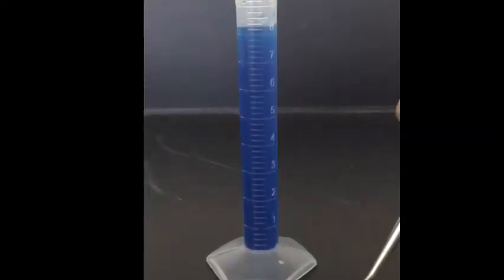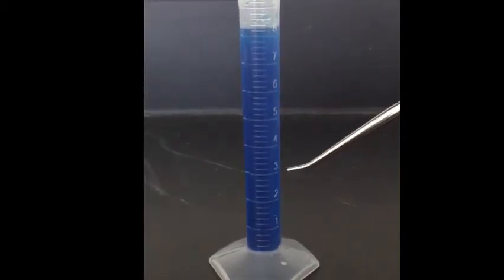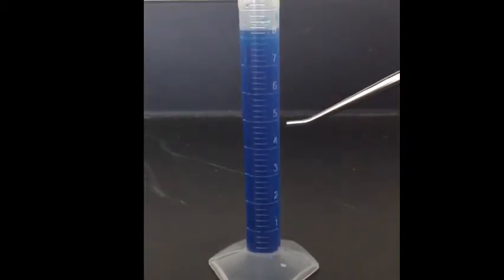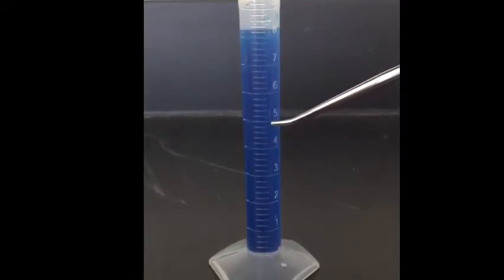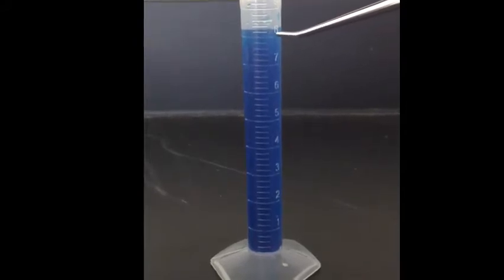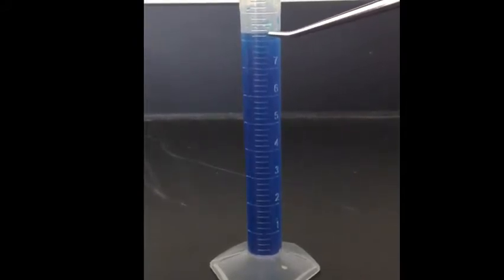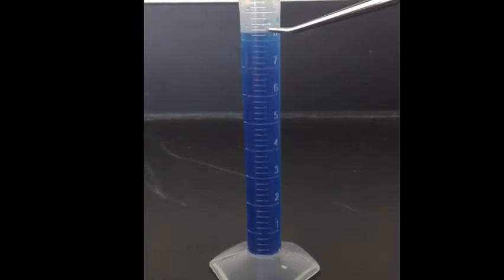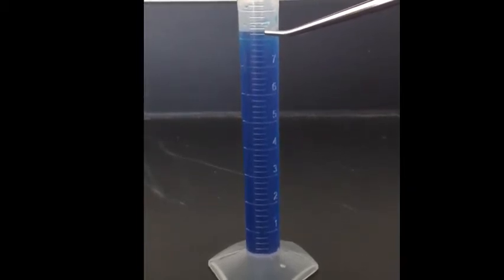In this graduated cylinder, each of the large marks only represents 1 milliliter. So the hash marks in between represent 2 tenths of a milliliter. So here we have 8, 8.2, and between is 8.3. The volume of this reading is 8.3 milliliters.